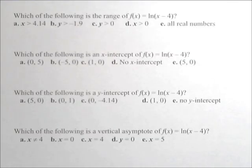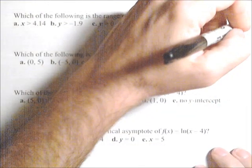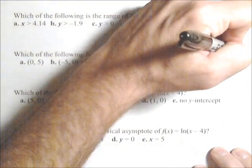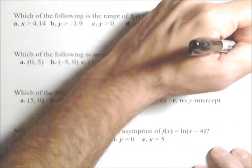So we've got a few problems here dealing with the graph of a logarithm. And in general, the graph of a logarithm looks like this. That would be y equals, since we're doing natural log, we'll say ln of x.